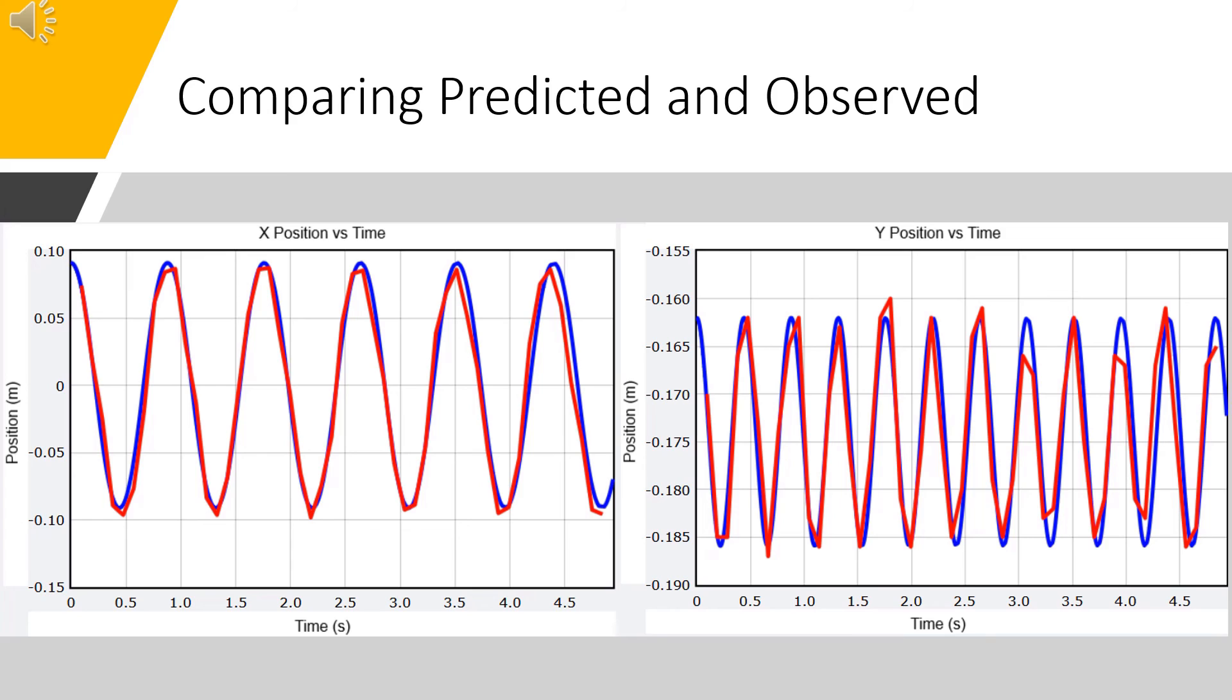However, in the y dimension, it is a tad less accurate, possibly due to the sources of error identified earlier, such as the low frame rate and human error in tracker. One of those sources of error, the string exhibiting a spring force, may have a large impact on the y graph.